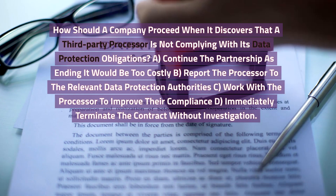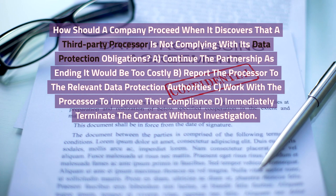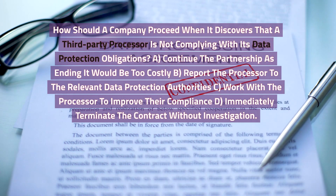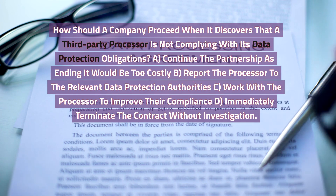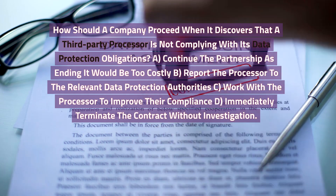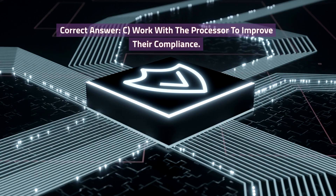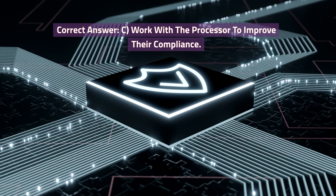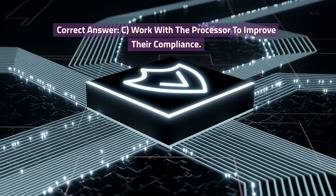How should a company proceed when it discovers that a third-party processor is not complying with its data protection obligations? A. Continue the partnership as ending it would be too costly. B. Report the processor to the relevant data protection authorities. C. Work with the processor to improve their compliance. D. Immediately terminate the contract without investigation. Correct answer: C. Work with the processor to improve their compliance.